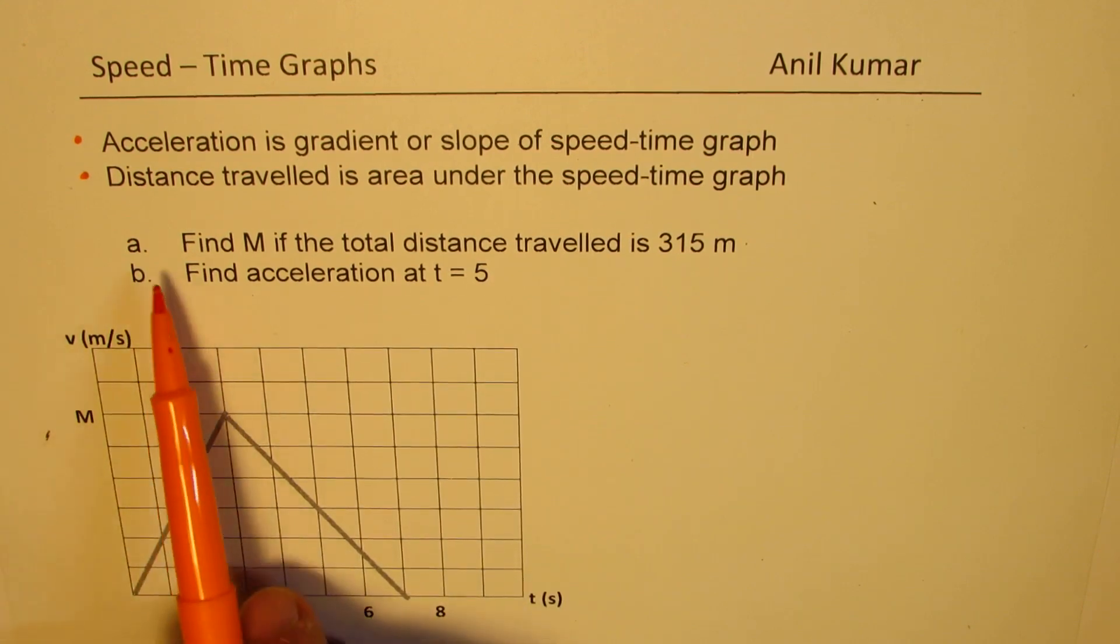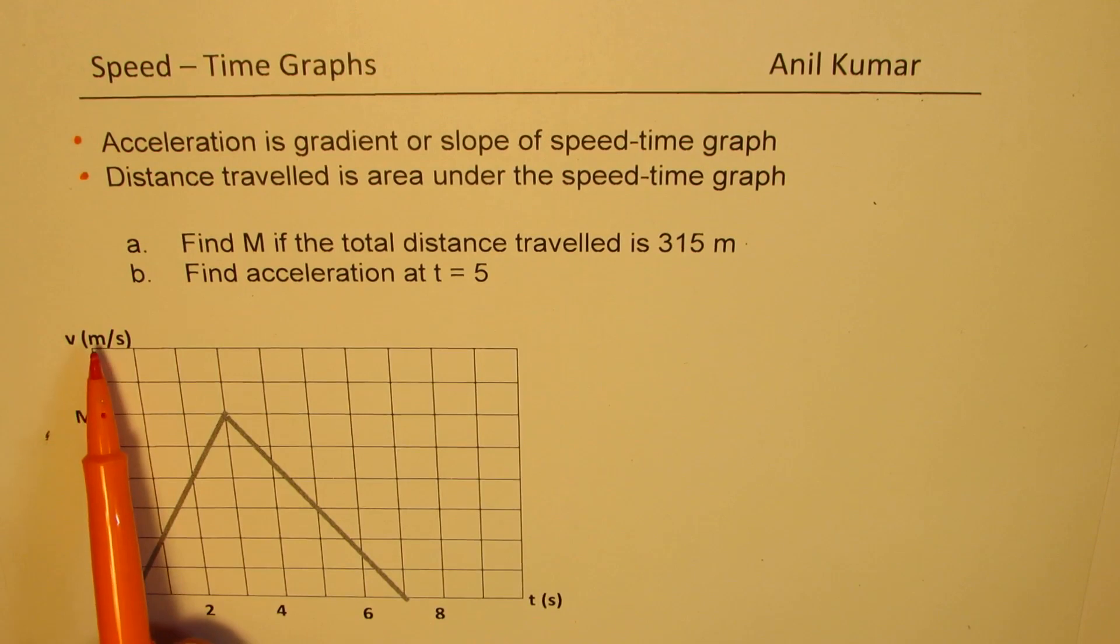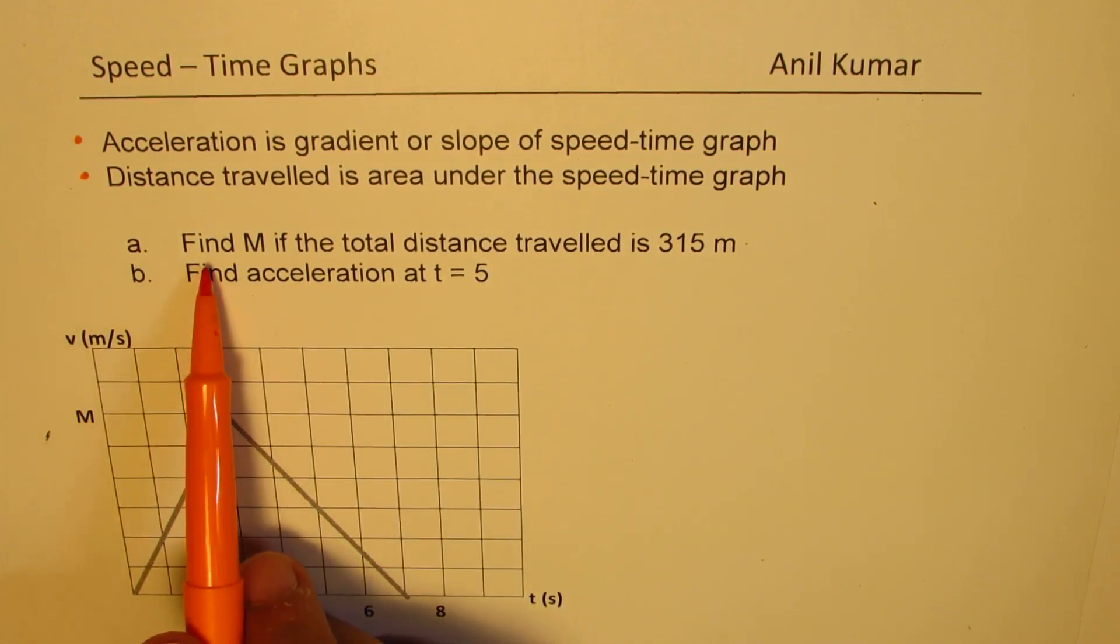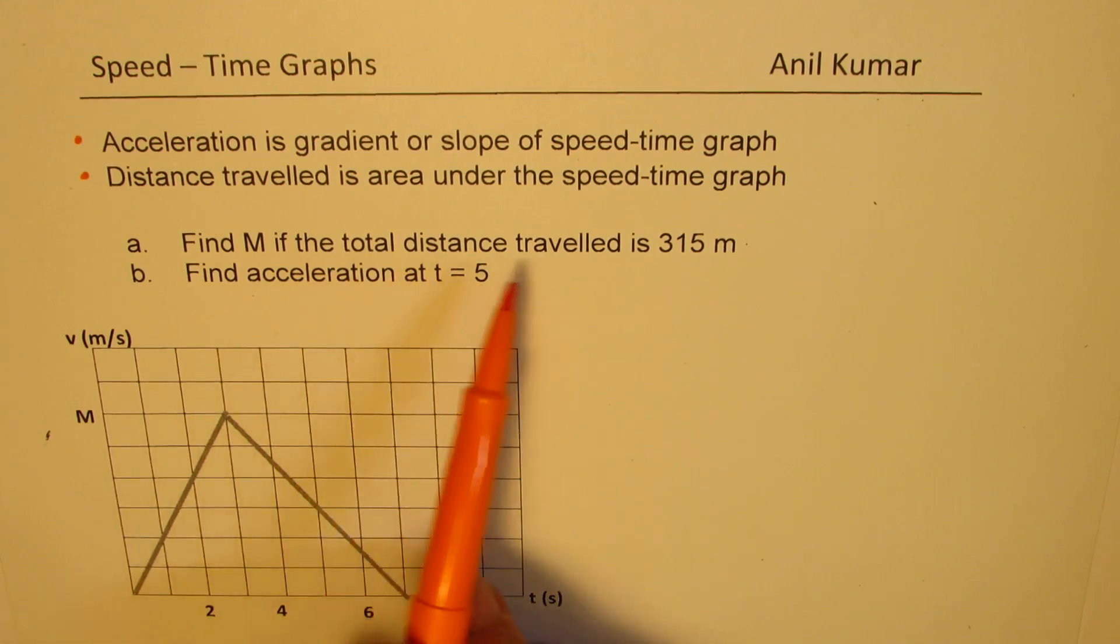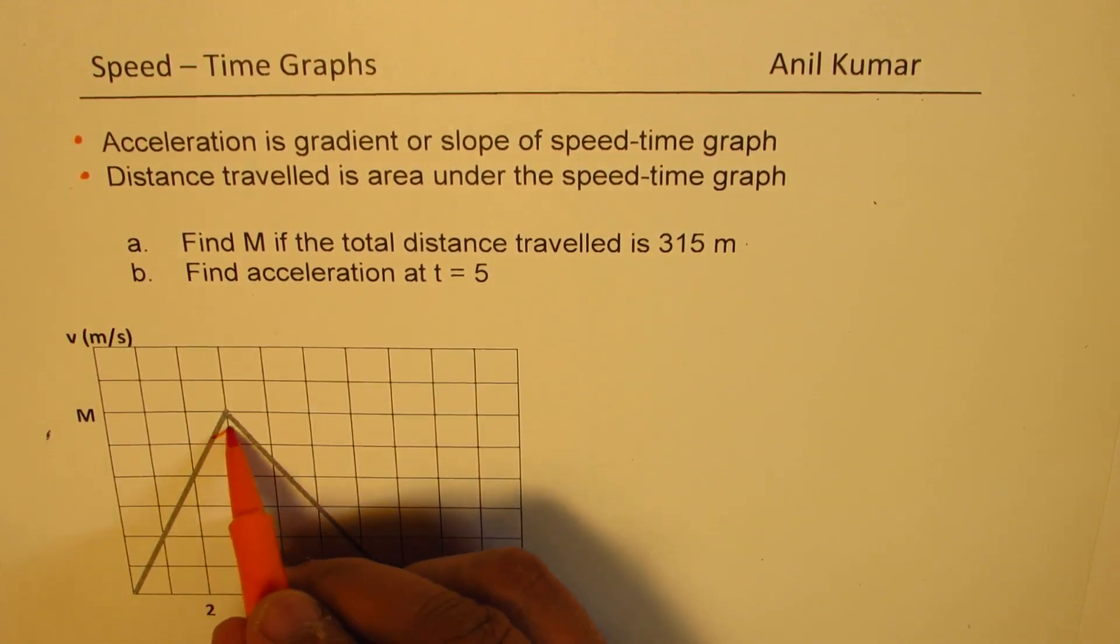Here we have two parts. Part A is find M. So in this velocity versus time graph, velocity meters per second time in seconds, we are given path of an object. Question is find M if the total distance traveled is 315 meters. So total distance is the area.